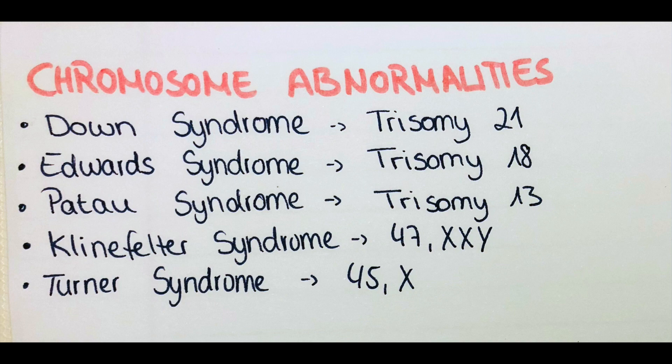The next disorder is Edwards syndrome, also known as trisomy 18. People affected by that are usually born very small and have a small head and jaw, and usually present with intellectual disability. Patau syndrome, also known as trisomy 13, affects individuals who also present with intellectual disability, microcephaly, polydactyly — meaning more than five fingers on one hand — different heart defects, and structural eye defects.